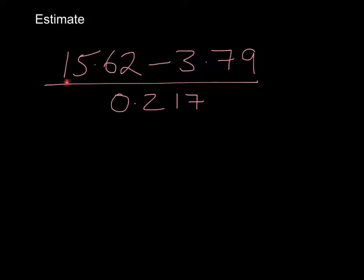Okay, in this question, I gave you 15.62 minus 3.79 divided by 0.217. So let's start by estimating the digits and rounding them up to one significant figure. So 15.62, well, that's going to go to 20.